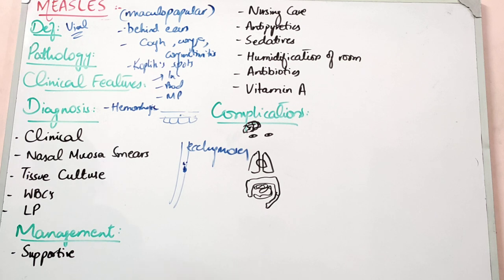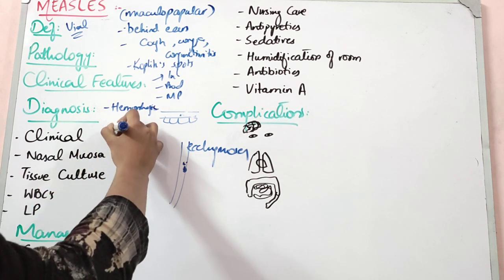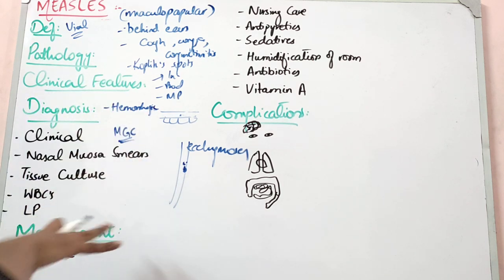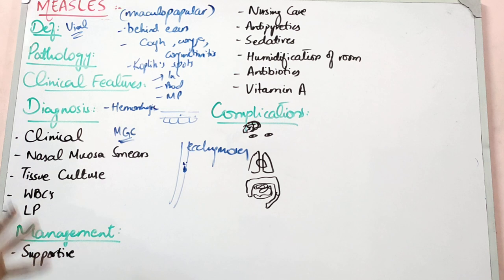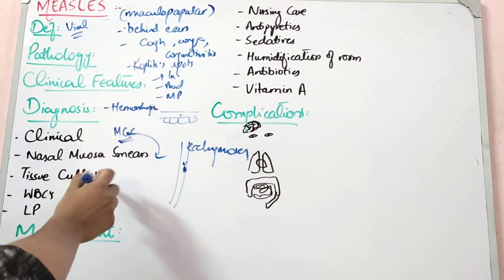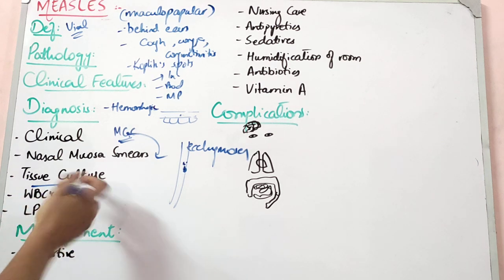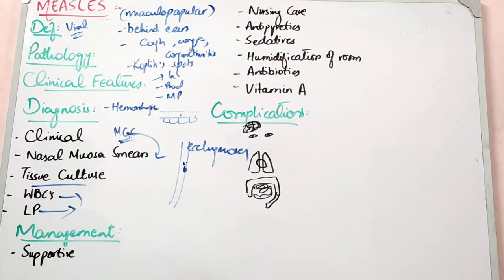Diagnosis is usually done clinically — it is very easy. If needed, you can do a peripheral blood smear, which will show multinucleated giant cells, because white cells accumulate against the virus. You can also spray the nasal mucosa and directly check for multinucleated giant cells. White blood cell count will be low, as with viral infections. If there are neurological signs, you can do an LP to check CSF for viral meningitis signs.